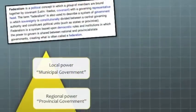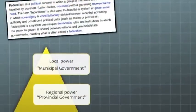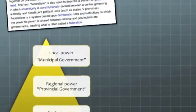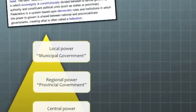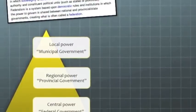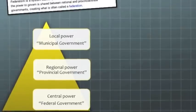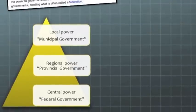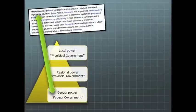In Canada we have three levels of government: the local government — in cities it's known as the municipal government — the regional government, known as the provincial government, and the central government, known as the federal government. We gave the central level of government the same name as the system that requires them to share their power, just to make social studies a little more confusing. Each of these levels of government share power with different responsibilities.